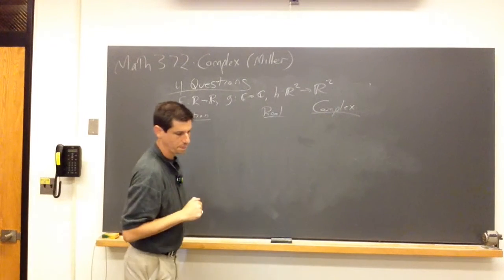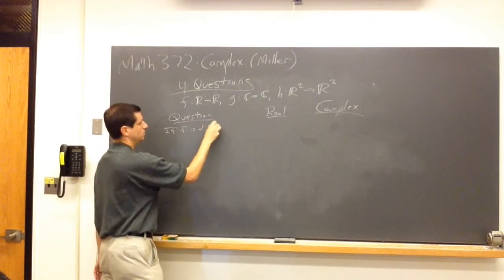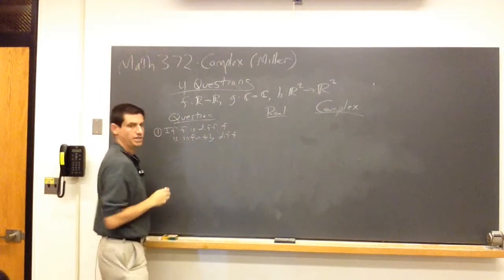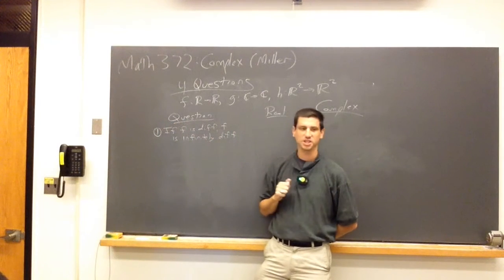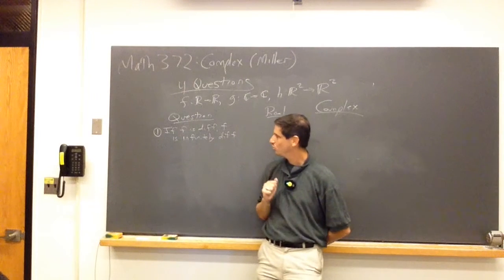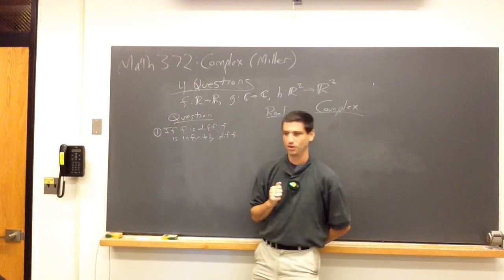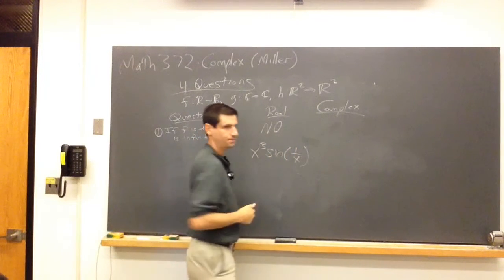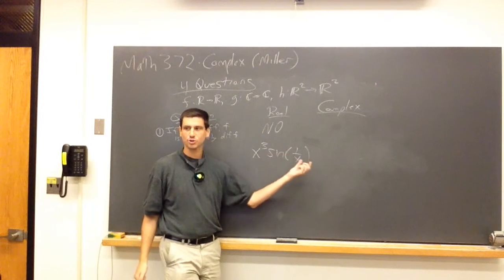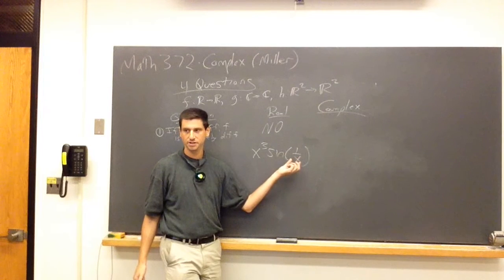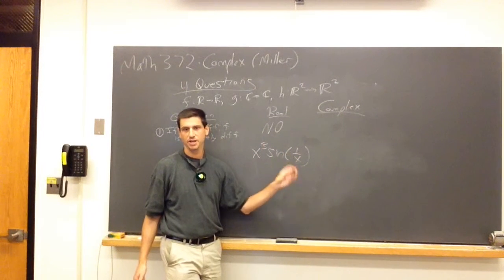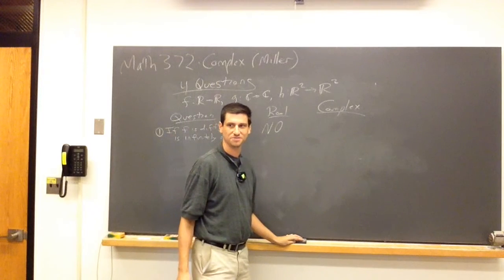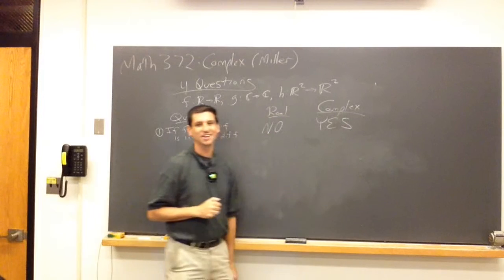Question one: if F is differentiable, is it infinitely differentiable? You guys answer the real case, I'll answer the complex case. In the real case: no. A good example is something like x³·sin(1/x) — the sine fluctuates wildly near zero, but the x³ keeps it under control. This will be differentiable maybe once but not twice. What do you think the answer is in complex? The goal is to show you why complex is so different from real.